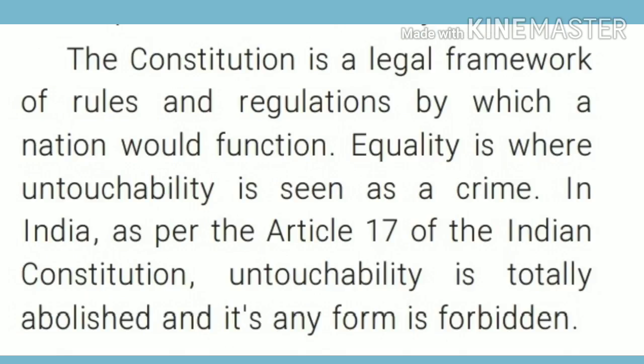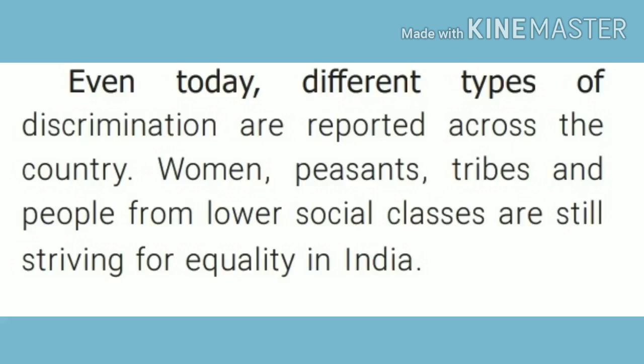The constitution is a legal framework of rules and regulations by which a nation could function. Equality is where untouchability is seen as a crime. In India, as per Article 17 of the Indian Constitution, untouchability is totally abolished and its any form is forbidden. Even today, different types of discrimination are reported across the country.